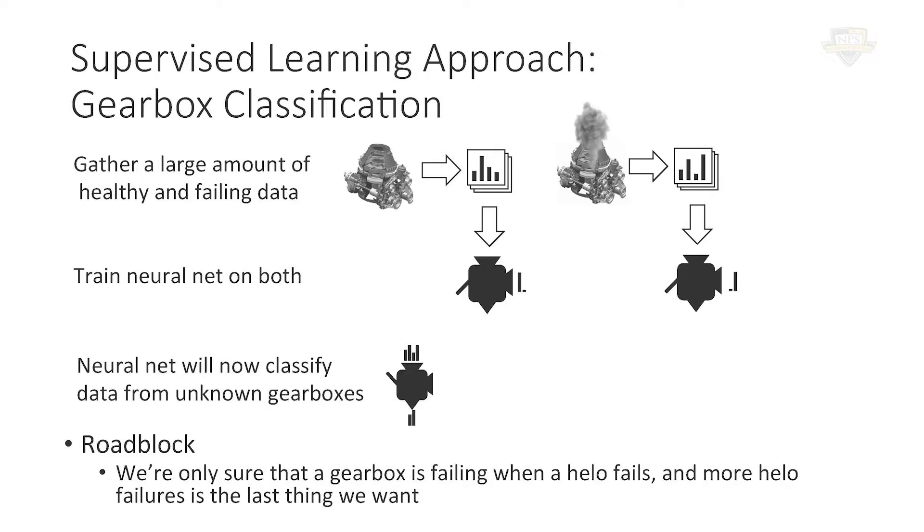We could take healthy gearboxes, gather their vibration spectra, and train with our black box supervised learner, saying we want the first output to be high when we have a healthy gearbox. We could also get a bunch of unhealthy ones — same process except we want the second output to be high. Then when we're done, if successful, we could produce a new spectrum from a gearbox we're concerned about, look at the outputs, and if the second number is higher we'd say that one might fail.